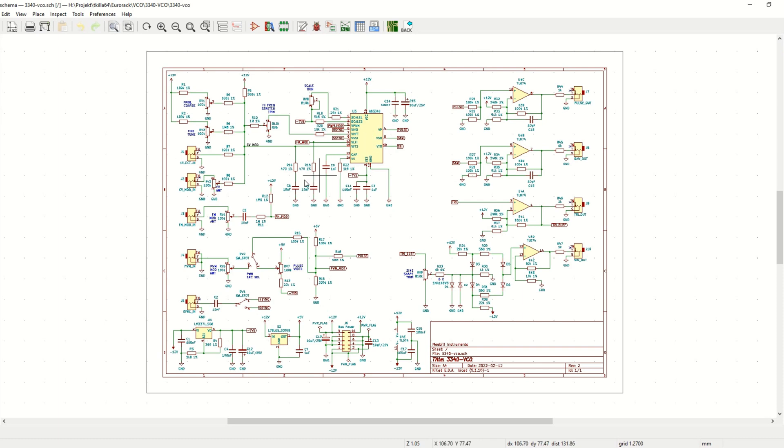We have the CV network here. Not much to say about that. I added a CV amount here as a separate pot because I thought that it could be interesting to have the opportunity to control the level here if you add external modulation that you want to have on top of the one volt per octave feed that you get from your CV source.